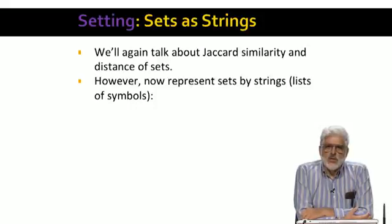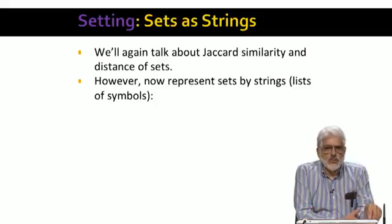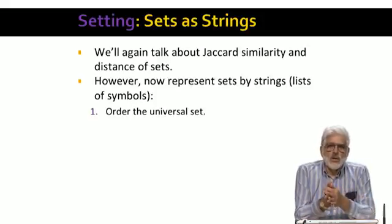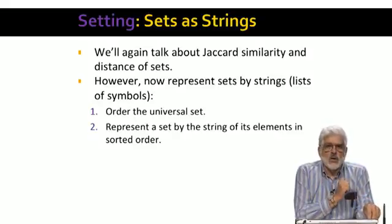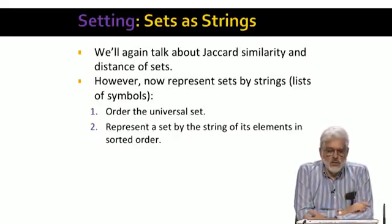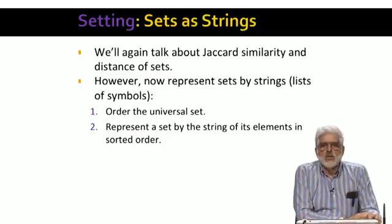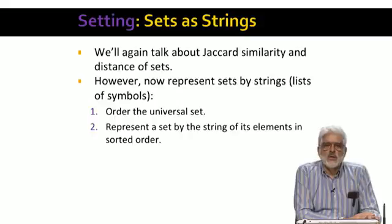Our first step is to represent sets by strings. The characters of the string are the elements of the set in order. That is, we pick an order for the elements of the universal set. For any set, we can sort its elements according to this order. The string representing a set is the list of these elements in the sorted order. A special property of these strings is that no character, that is, a set element, appears twice in the string.